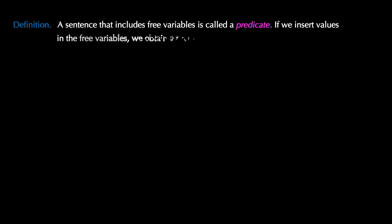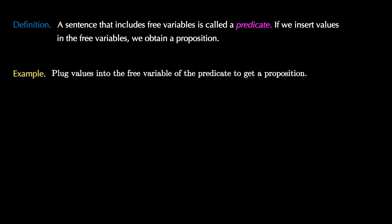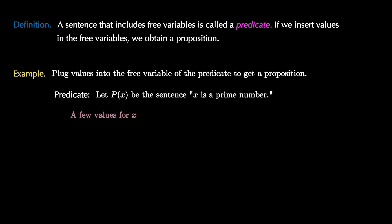A sentence that includes free variables is called a predicate. If we insert values into the free variables, then we obtain a proposition. Let's see an example. Let's plug some values into a free variable of a predicate to get a proposition. Let's consider the predicate p(x) to be the sentence 'x is a prime number.'